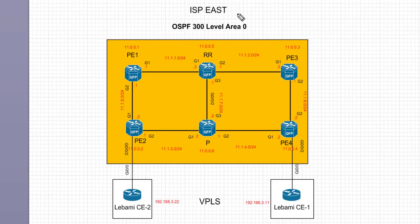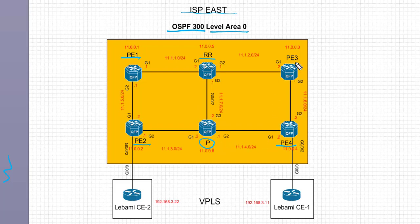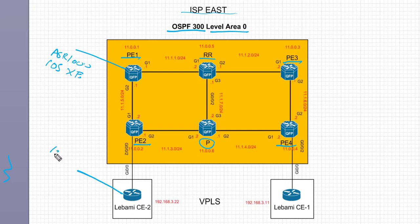Welcome back. Today we're going to take a look at ISP East. We have the topology in front of us, and the ultimate goal is to configure VPLS. ISP East is running IGP as OSPF in area 0. In terms of devices, we have PE1, PE2, PE3, PE4, one RR, and one P device. We're using CSR 1000V (ESR 1000) in ISP East.